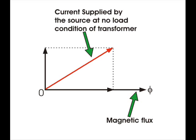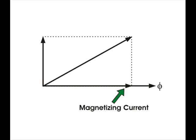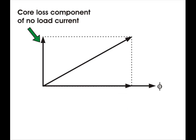Actually, the total electric current supplied from the source has two components. One is magnetizing current which is merely utilized for magnetizing the core, and the other component of the source current is consumed for compensating the core losses in the transformer.